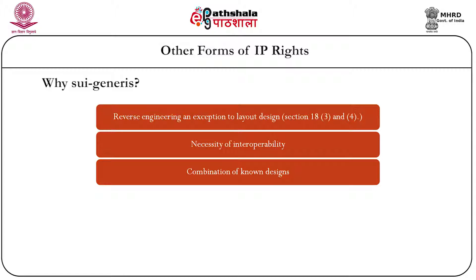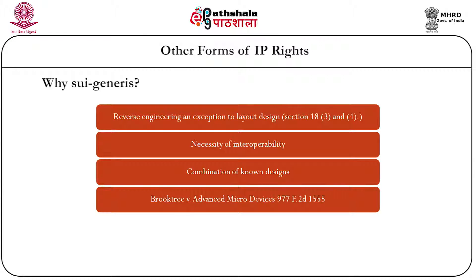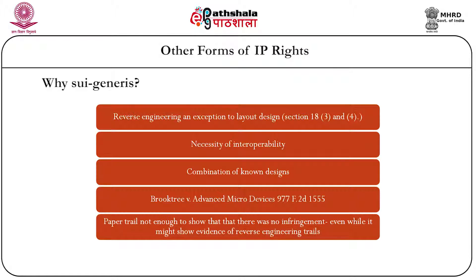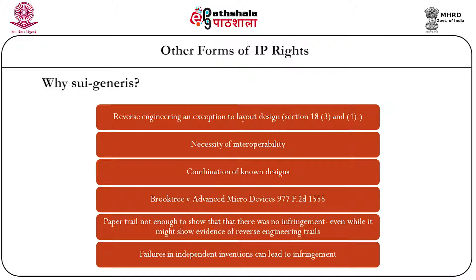In the case of Brooktree versus Advanced Micro Devices, an American decision of the Federal Circuit, the court concluded that a paper trail alone was not enough to show that there was no infringement, even while it might show evidence of reverse engineering. Maintaining a paper trail during reverse engineering trials is not sufficient to establish that there was no infringement. Infringement must be judged also on whether there was actual copying. Failures in independent invention can also lead to infringement, similar to patent protection logic, and the same logic is applied in semiconductor chip protection.